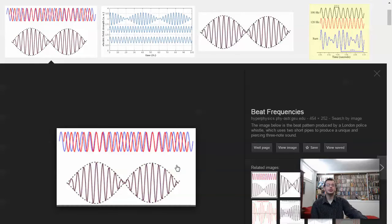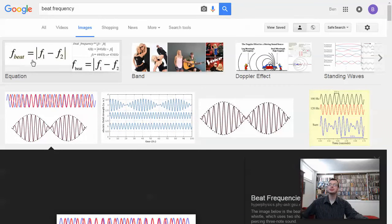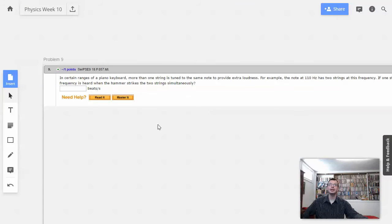The idea is you hear two beats if you have a frequency that has a difference of two. So just frequency beat equals one frequency minus the other frequency. Not a big deal.